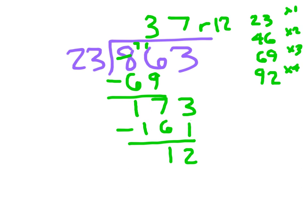If I express it as a mixed number and get away from writing a remainder, I'd just say it is 37 and 12 twenty-thirds.